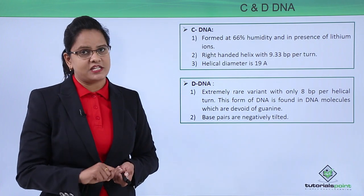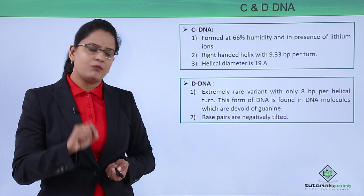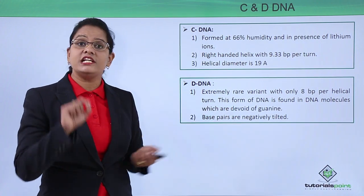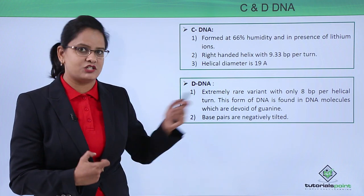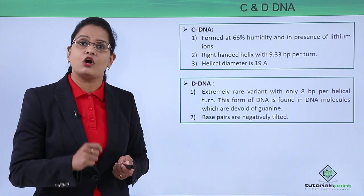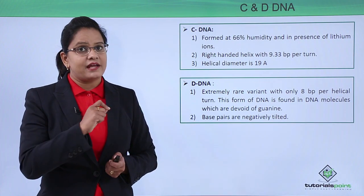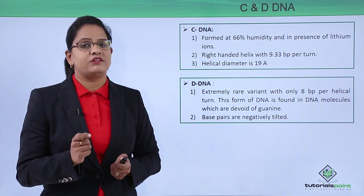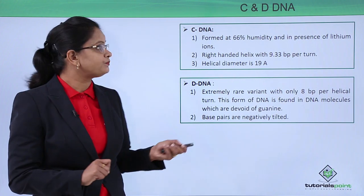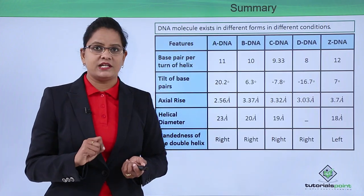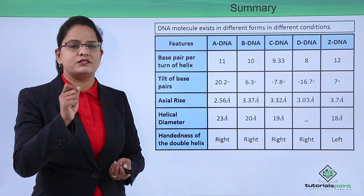D-DNA is an extremely rare variant with 8 base pairs per helical turn. This form of DNA is generally devoid of guanine — guanine bases are very scarce — which is why it is considered a rare form. Unlike other DNA forms where base pairs are positively tilted, in D-DNA the base pairs have a negative tilt.